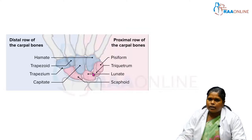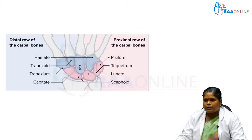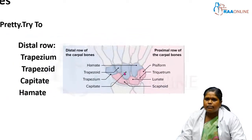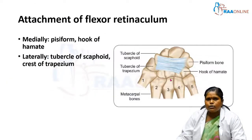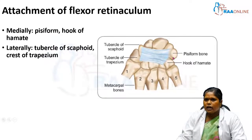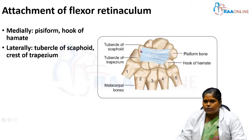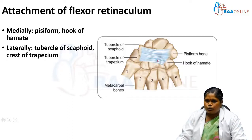These 8 carpal bones arranged in 2 proximal and distal rows form a concavity — the carpal arch — which is bridged by the flexor retinoculum. You can see the carpal arch here with the 8 carpal bones articulated with each other, and the rectangular flexor retinoculum — the deep fascia in front of the wrist — attached to these carpal bones. Its four angles are attached to four carpal bones.